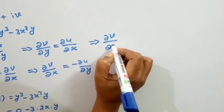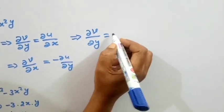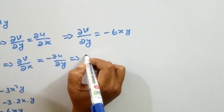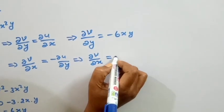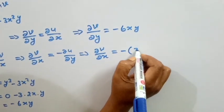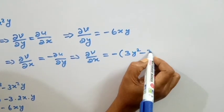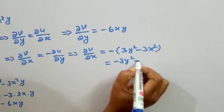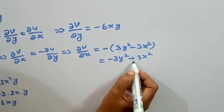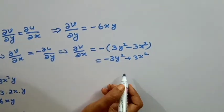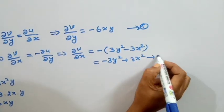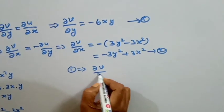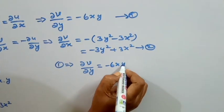So dou v by dou y equals dou u by dou x which is minus 6xy. And dou v by dou x equals minus dou u by dou y, which gives minus (3y square minus 3x square), equal to minus 3y square plus 3x square. Now we have these two equations to work with. From equation 1: dou v by dou y equals minus 6xy.